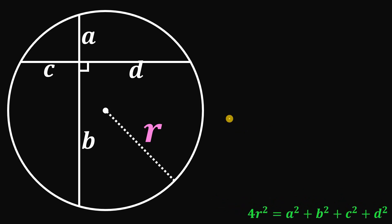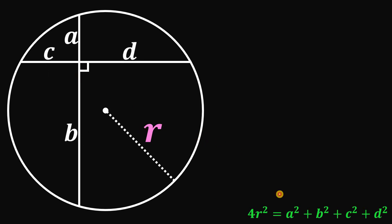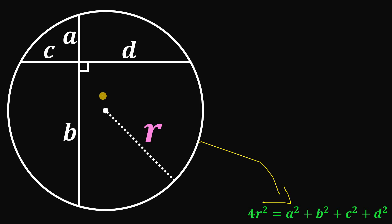In order to show the relationship of these segments A, B, C, D, and the radius R, namely 4R squared equals A squared plus B squared plus C squared plus D squared, what we're going to do is to draw a small rectangle inside our circle such that one of its vertices is at the center of this circle. Let's call the side lengths of this rectangle X and Y.